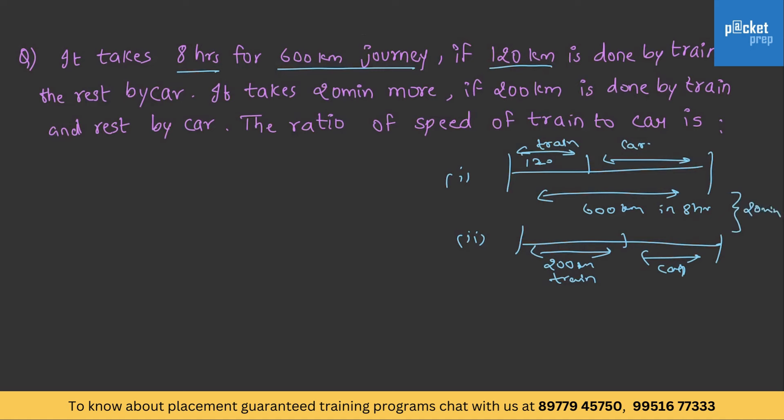So, he is asking the ratio of speed of train and speed of car. Let us solve this. As we do not know the speeds of train and car, let us assume the train speed as x kilometers per hour and car's speed as y kilometers per hour.